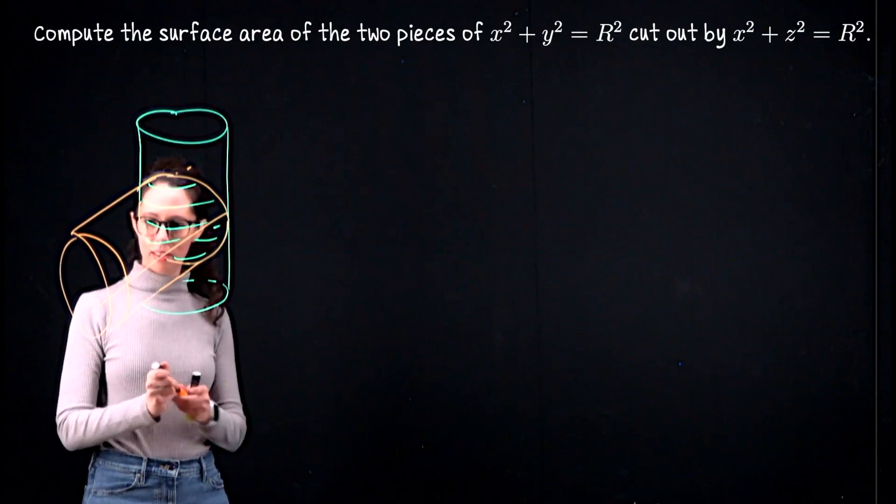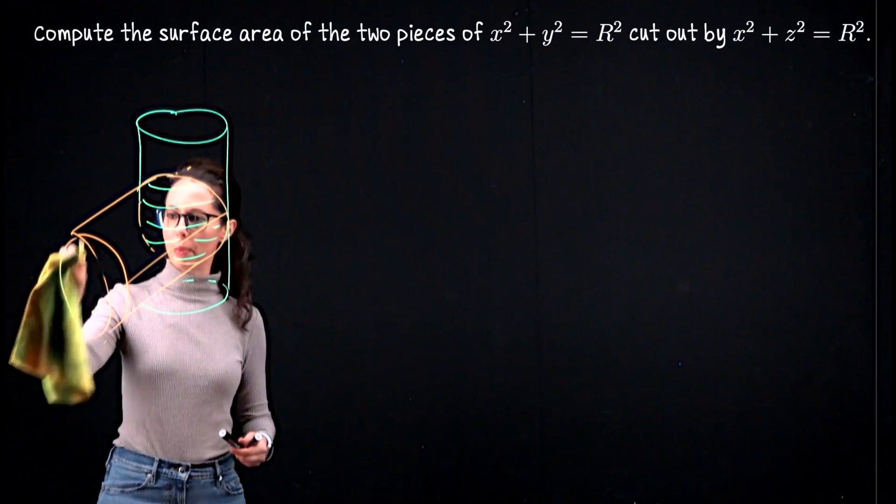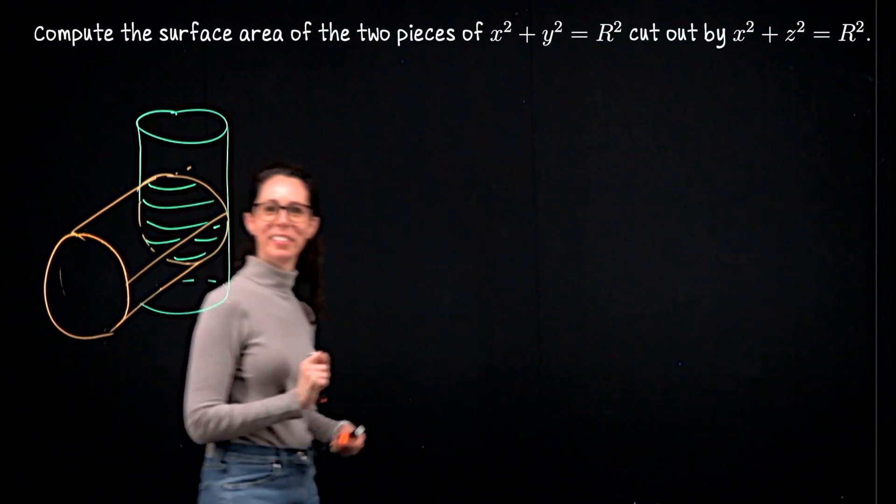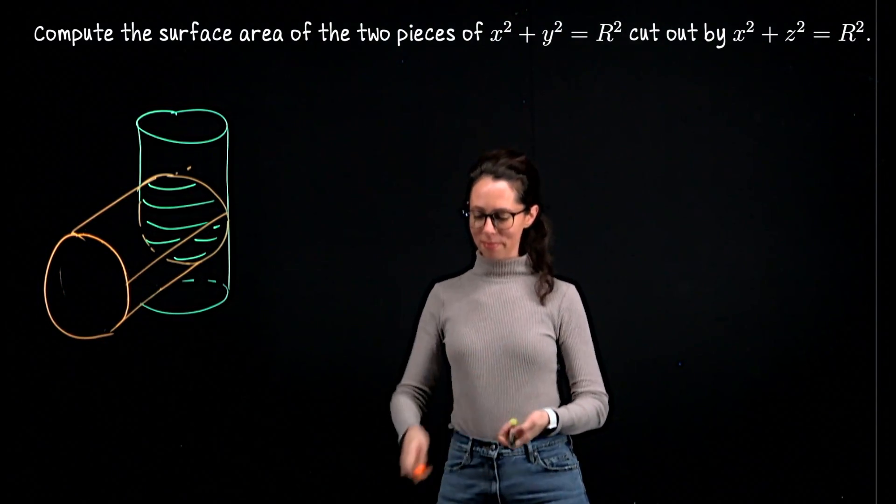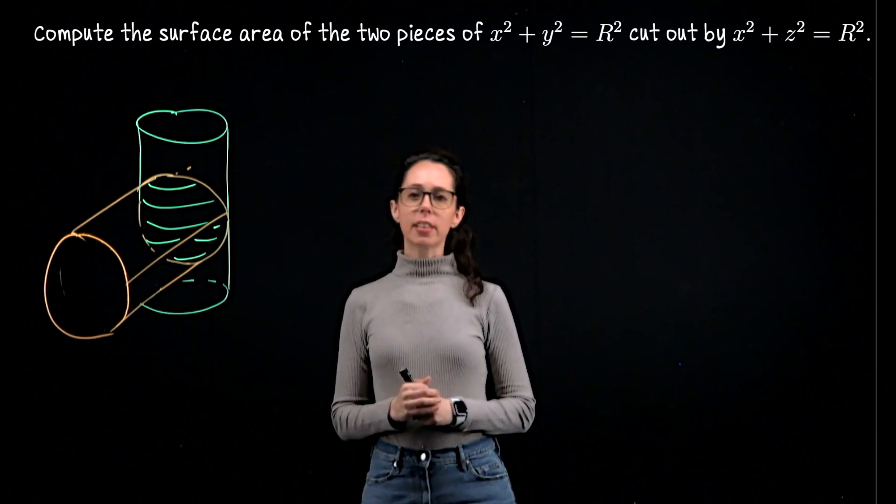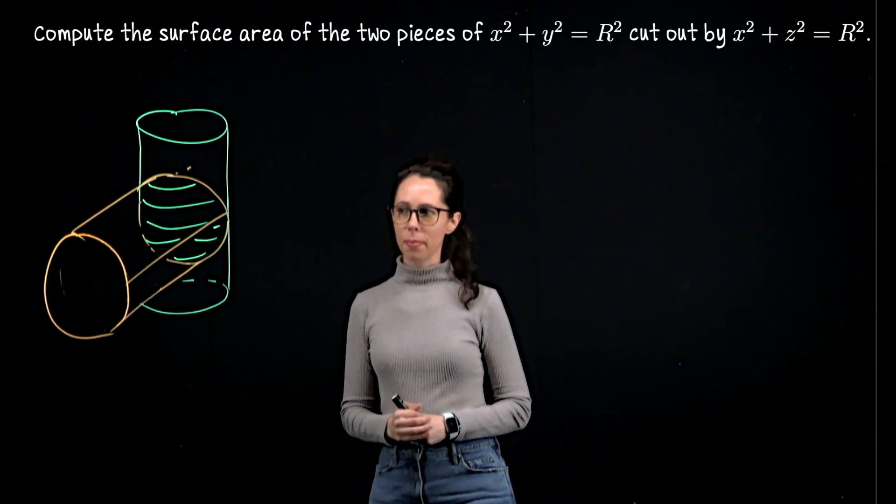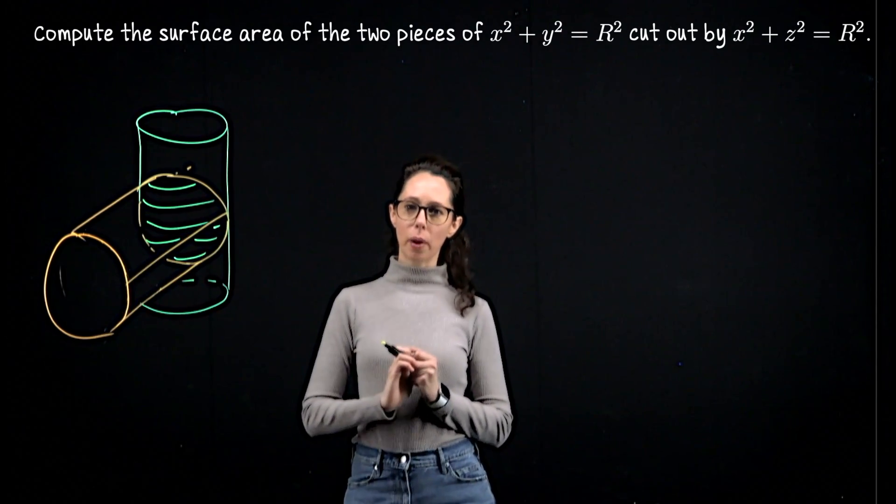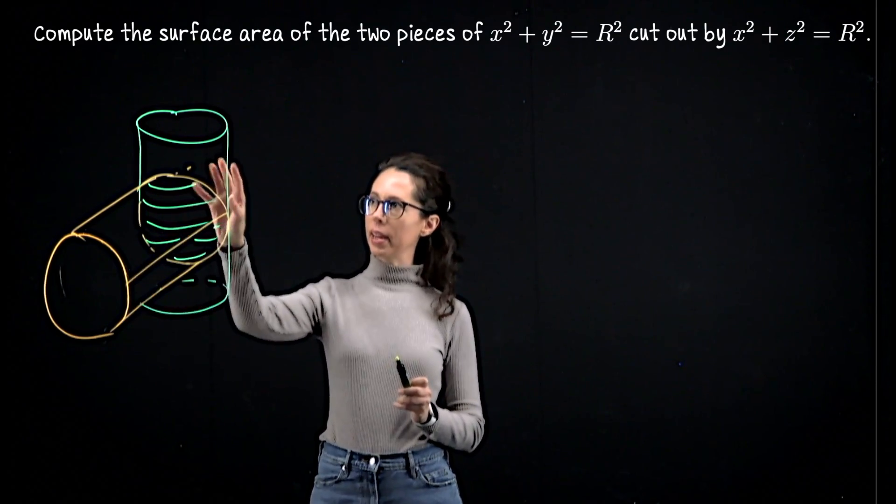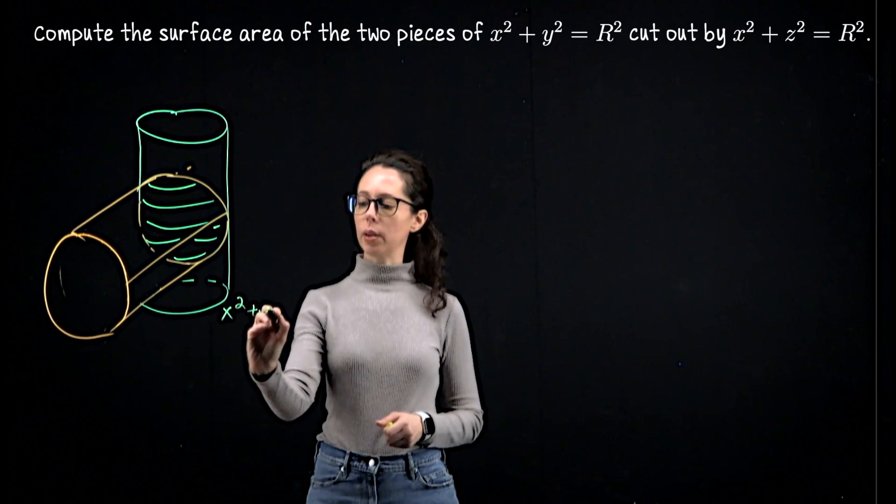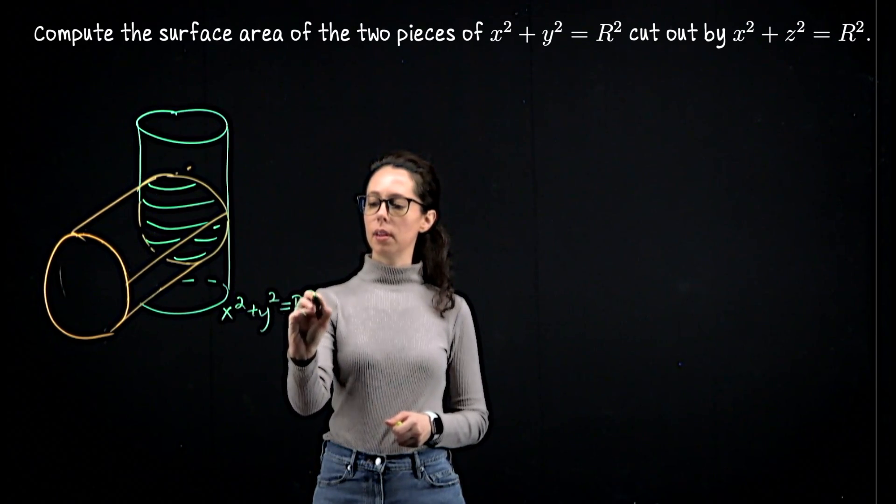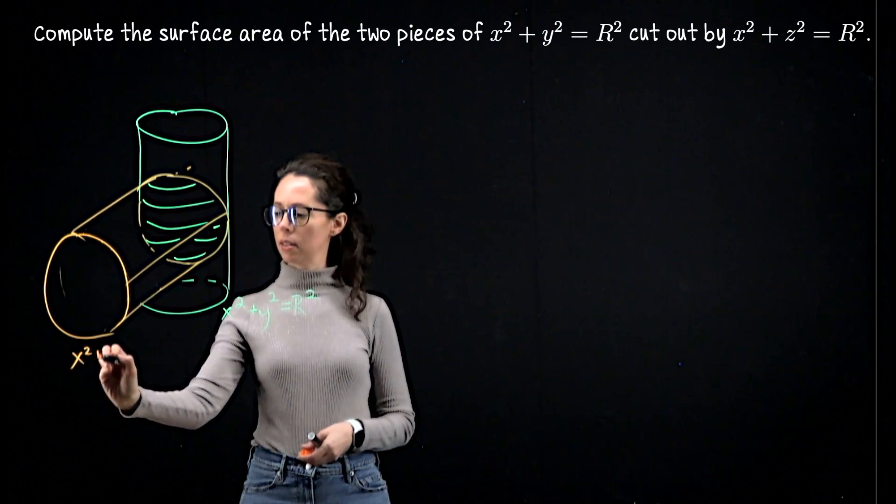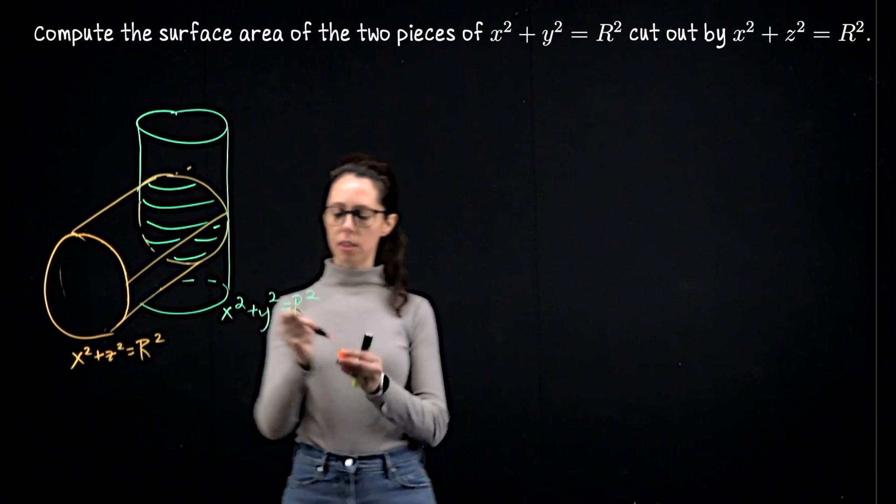Okay. I'm going to try to make this picture a little bit better. Both of these cylinders have radius capital R and I'm imagining that this orange cylinder, the cylinder x squared plus z squared equals capital R squared is hitting this cylinder x squared plus y squared equals R squared from the side. So let me add some axes to this so that we can really see the shape emerge.